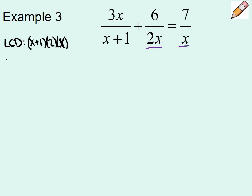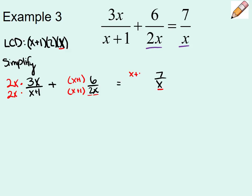Step two, we want to simplify. I want to take each fraction and multiply it by the LCD it's missing. So let's start off with our first fraction. It's 3x over x plus 1, which means it is missing a 2 and an x. So top and bottom times 2x. Plus sign. Our next fraction is 6 and 2x. This fraction already has a 2, already has an x. Therefore, it is only missing the x plus 1. The third fraction is 7 over x. It already has an x. Therefore, it is missing the x plus 1 and the 2.